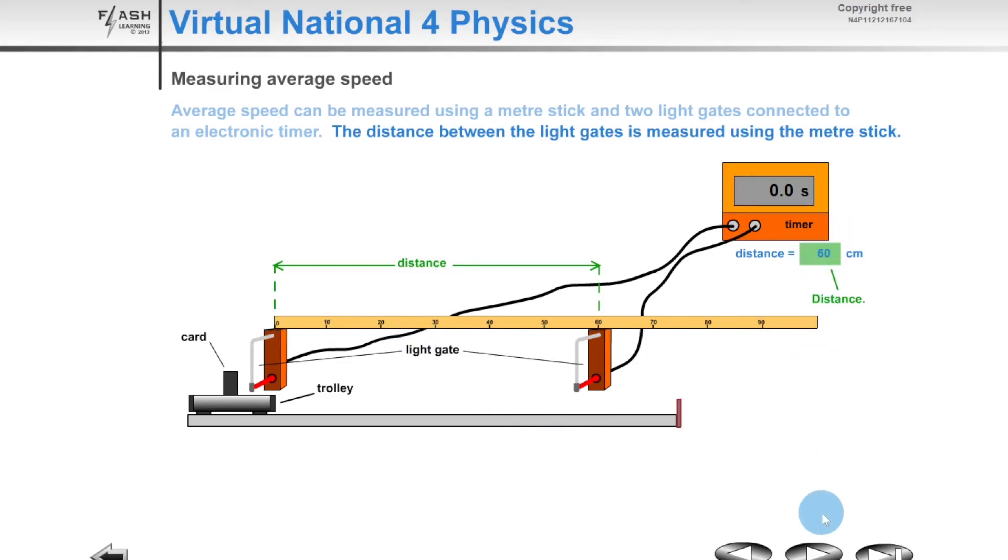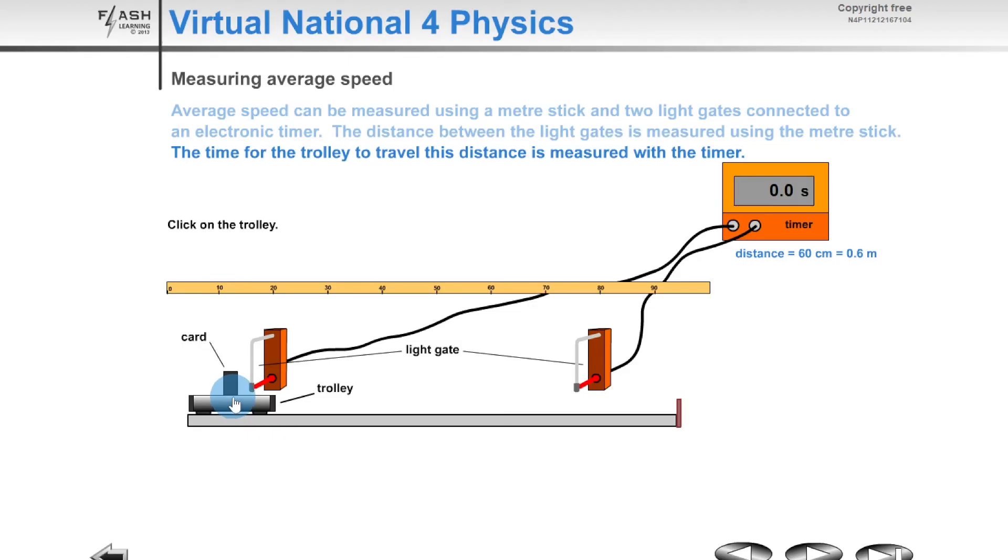That means our distance is 60 centimeters, which is the same as 0.6 meters. If the ramp was at an angle and I released the trolley, you can see that the timer starts when the light beam is cut on the first light gate, and then the timer stopped when the light beam is cut on the second light gate.